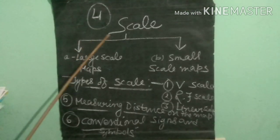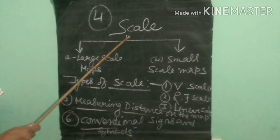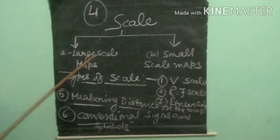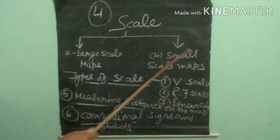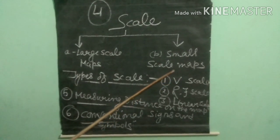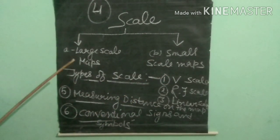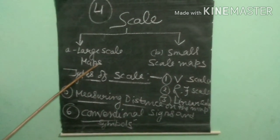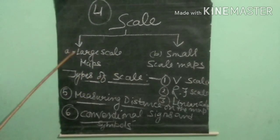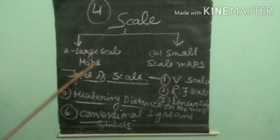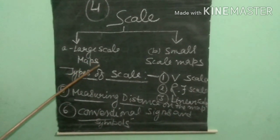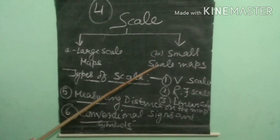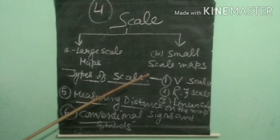The fourth topic is scale. Scale can be divided into two groups: the first is large scale maps and the second is small scale maps. Large scale maps show a small area in greater detail, while small scale maps show a larger area in less detail.